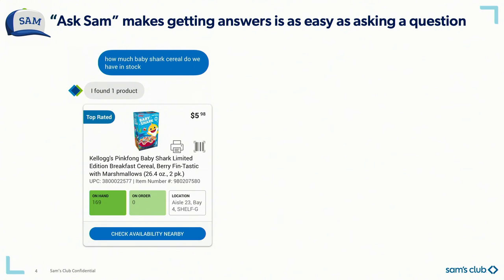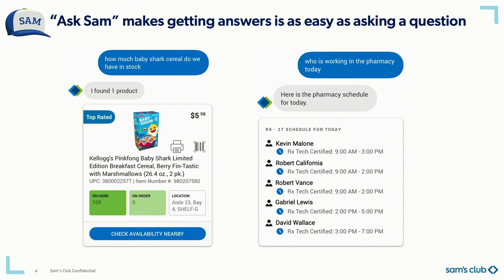Related to product information — if you ask how much baby shark cereals do we have in stock, it gives us the location of the product and how many quantities are present in the club. You can see the location and quantities for the product. For scheduling information, if club members want to know who is working in the pharmacy department today, they can ask, and it gives the pharmacy schedule — for example, Kevin is working from 9 a.m. to 3 p.m.